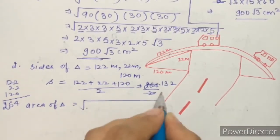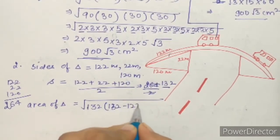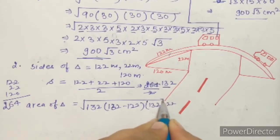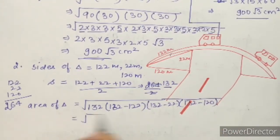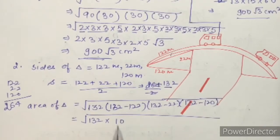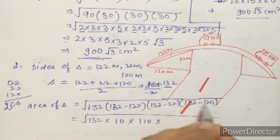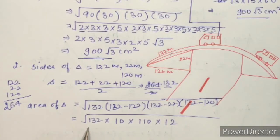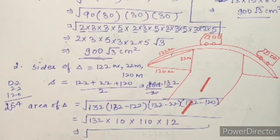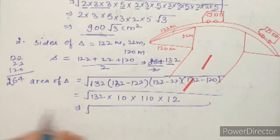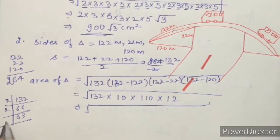Now we apply Heron's formula: Area = √(s × (s−a) × (s−b) × (s−c)) = √(132 × (132−122) × (132−22) × (132−120)). Calculating: 132 − 122 = 10, 132 − 22 = 110, and 132 − 120 = 12. So Area = √(132 × 10 × 110 × 12).